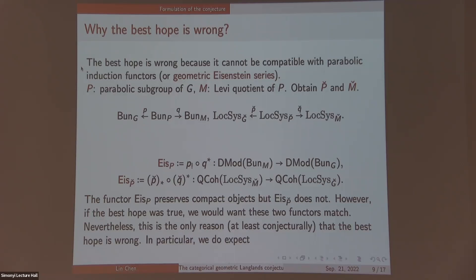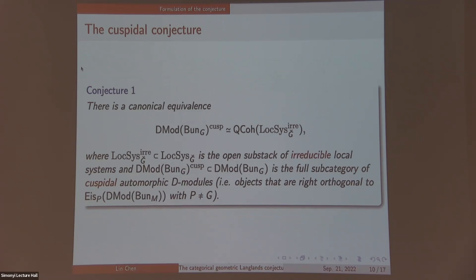Actually this is the only reason that the best hope would have failed. So in particular, we do expect the following. It says that when you restrict to some smaller part, there's such an equivalence. By smaller part, we mean we only consider irreducible local systems. We don't consider these problematic things. They form an open substack of Loc_SG-check. And on the automorphic side, we consider cuspidal D-modules. Here, cuspidal is a geometrical analog of cuspidal automorphic forms. In geometric representation theory, you just define it as orthogonal to all these Eisenstein series.